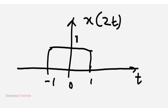So this will be x(2t) which is just compressed along the t axis but is a rectangular signal with amplitude 1.